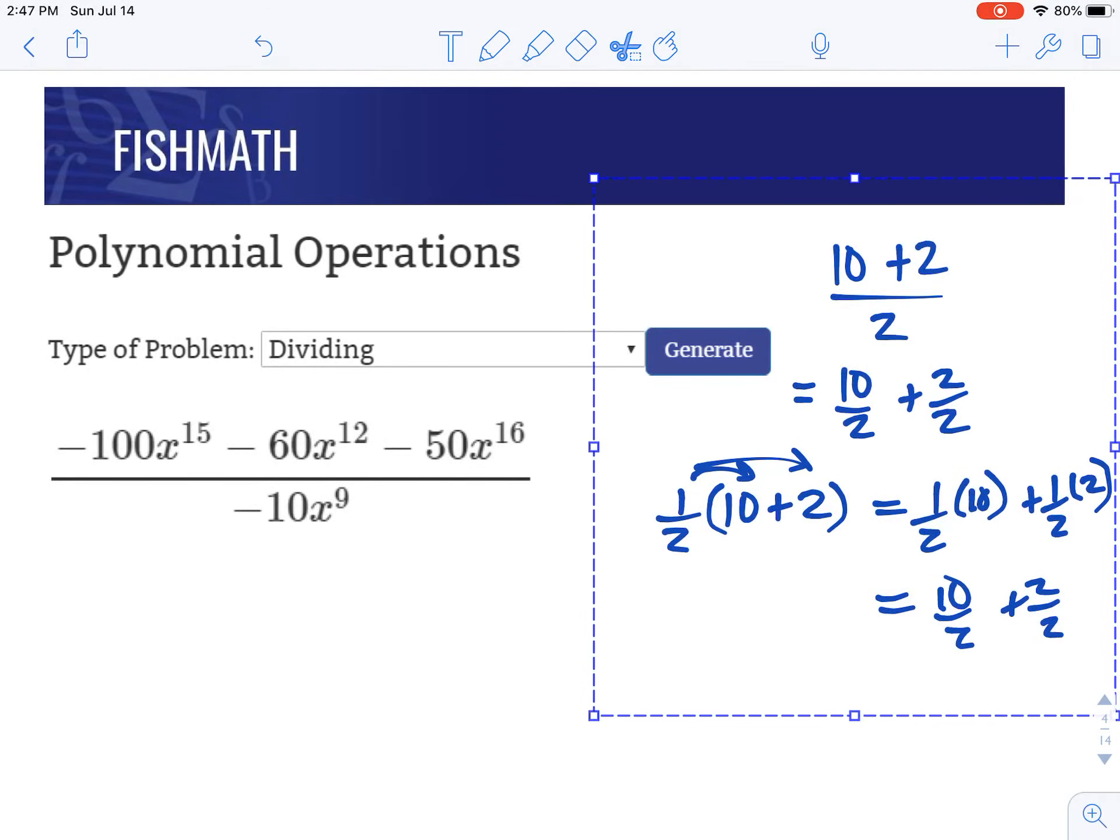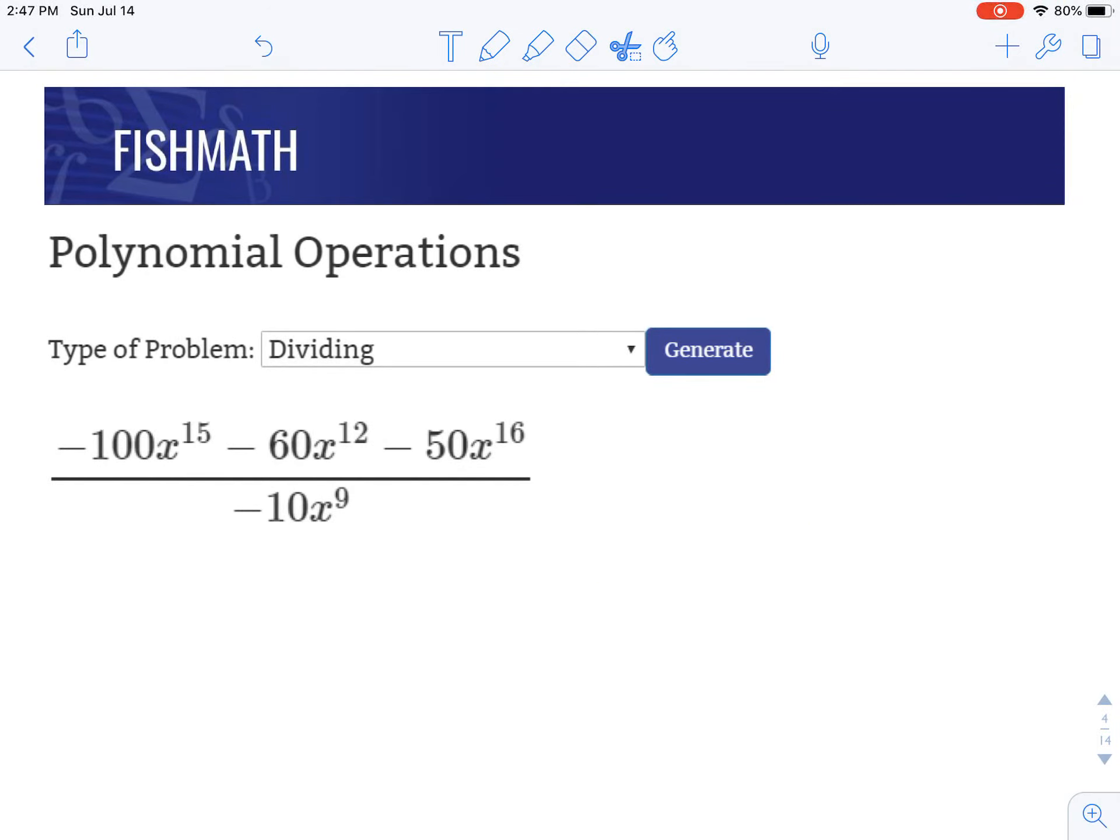So that's what we're going to do. It makes it a little bit easier to think about. So we're going to divide the negative 100x to the 15th. That'll be divided by negative 10x to the 9th. And then we're going to do plus negative 60x to the 12th divided by negative 10x to the 9th plus negative 50x to the 16th divided by negative 10x to the 9th. And we'll just divide every single piece separately by that negative 10x to the 9th.